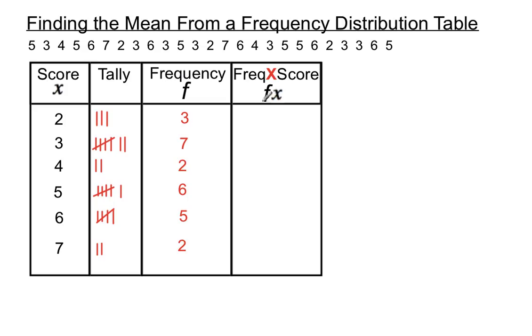So that fx column, all we do to find the number that we need to put in there is to multiply the score by how many times it occurs. So what that does is it really adds up the totals of the scores.